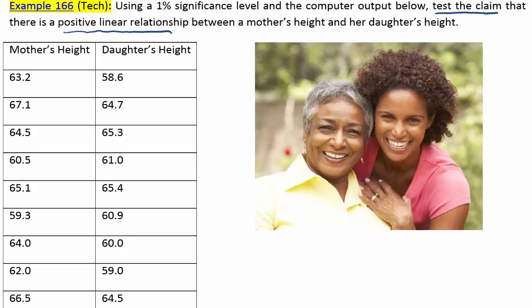If I want to state the claim, first of all, how do I know it's a hypothesis test? Because they're saying test the claim. And they're talking about this positive linear relationship, so I know it's a hypothesis test about the slope parameter. So I'm going to say that I want to test the claim that the slope, beta 1, is greater than 0.